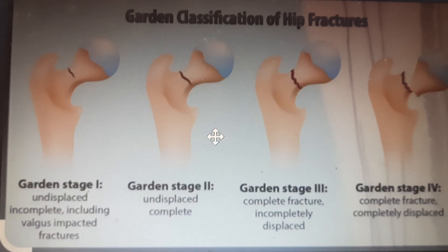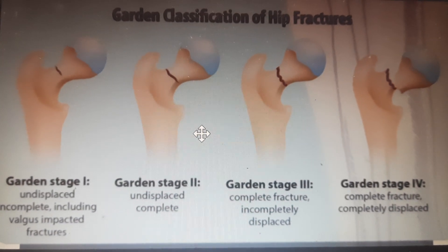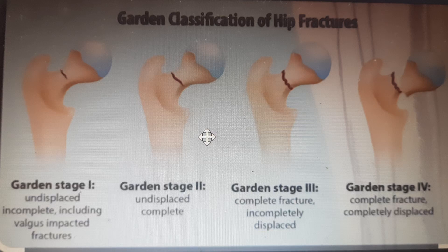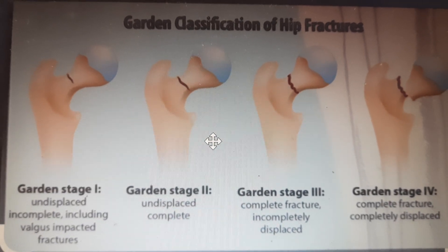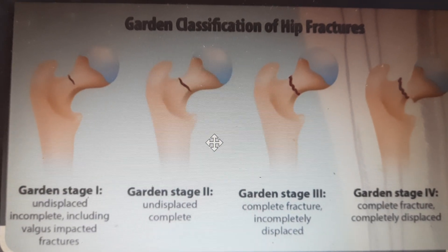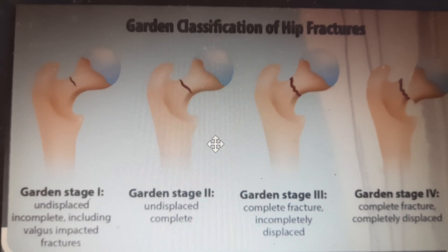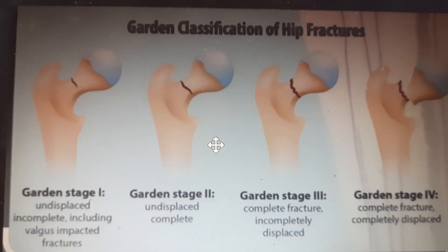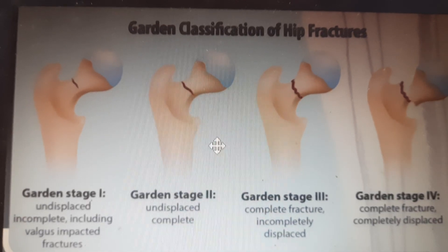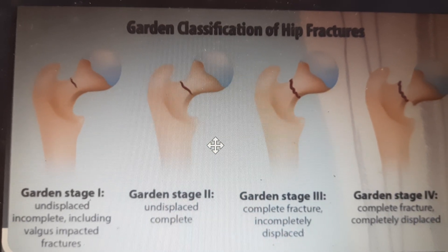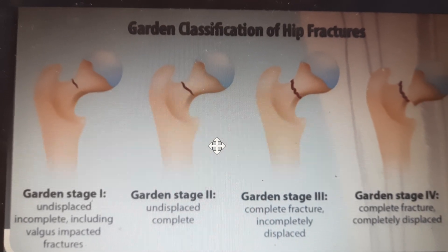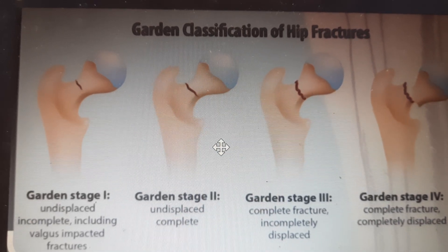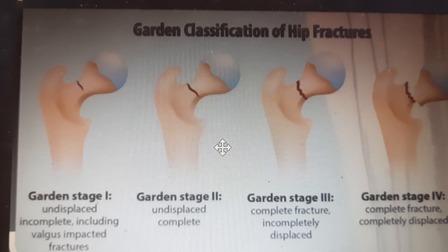One easy method of remembering is that in Garden stage 1 it is an incomplete fracture, whereas Garden stages 2, 3, and 4 are complete fractures. In Garden stage 1 it is undisplaced and incomplete, but in Garden stage 2 it is an undisplaced fracture.